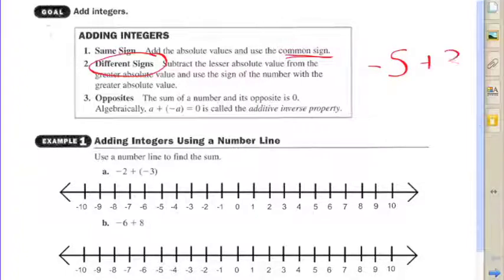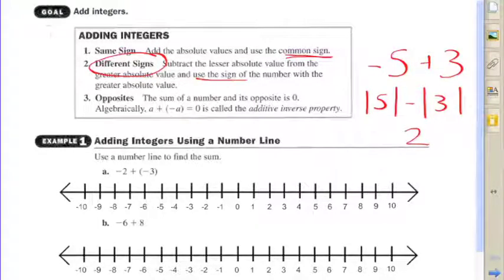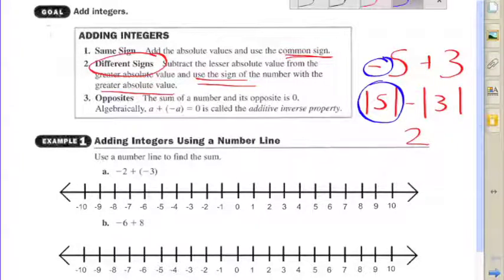If they have different signs, for example negative five plus three, what you do is you subtract the lesser absolute value from the larger absolute value. The absolute value of negative five is five and the absolute value of three is three, so you do five minus three and you come up with two. But then what you do is use the sign in your answer from the larger absolute value. The largest absolute value was five and the sign of that number was negative, so therefore the answer is negative two.